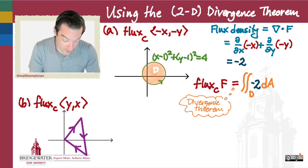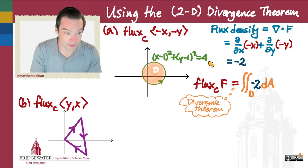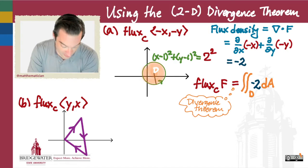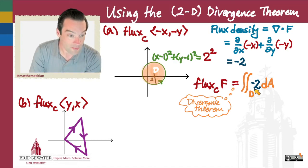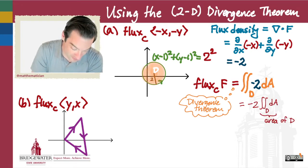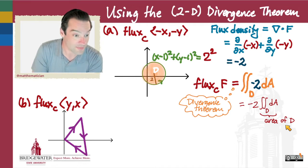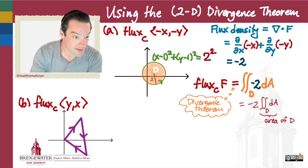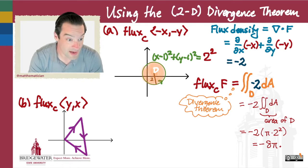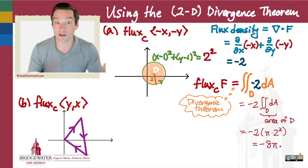That curve is a circle of radius 2, since (x - 1)² + (y - 1)² = 2². Because the flux density is a constant, we can pull -2 out of the integral, and what remains is just the area of the region. So the flux is -2 times the area of the disk, which is π × 2² = 4π, giving -8π.